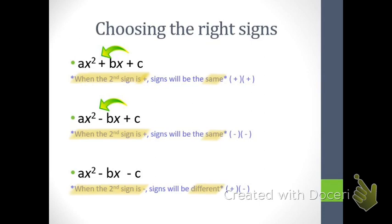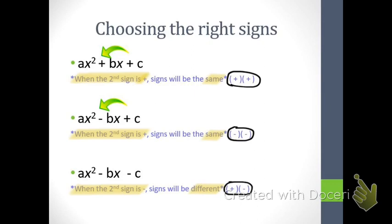After the first statement — when the second sign is positive, the signs will be the same — I've given you two sets of parentheses with a plus sign inside each. In the second statement, when the second sign is positive, the signs will be the same, but I've given you two sets of parentheses with two minus signs. How do you tell if they're both positive or both negative? Look at the arrow above the second sign going back to the first sign. Once we decide the signs are the same, we look back at the first sign to tell us what they will both be. But when the second sign is negative, the signs will be different — one's plus, one's minus.